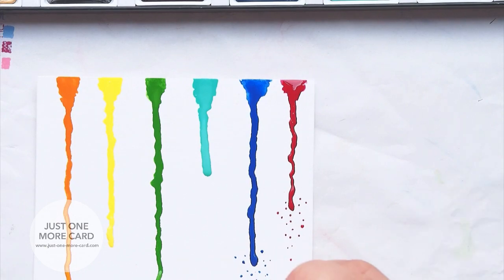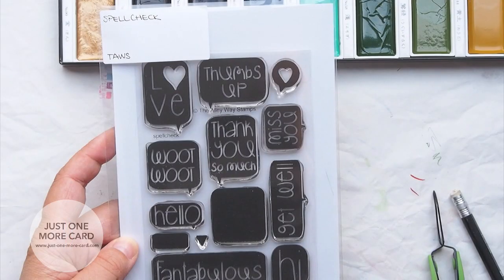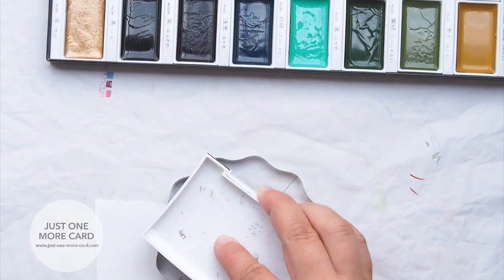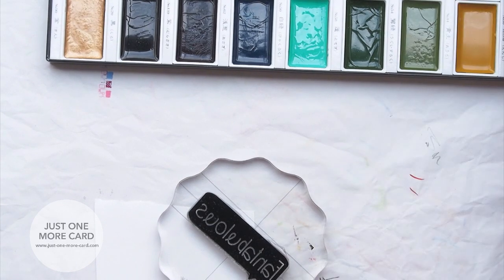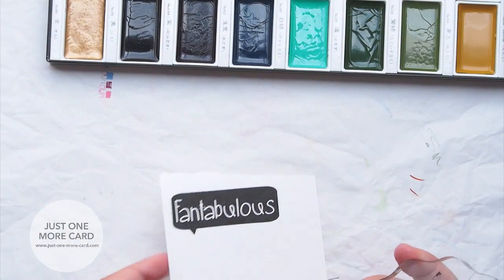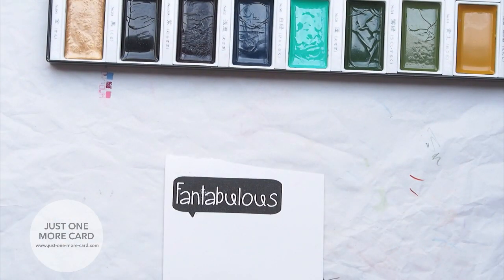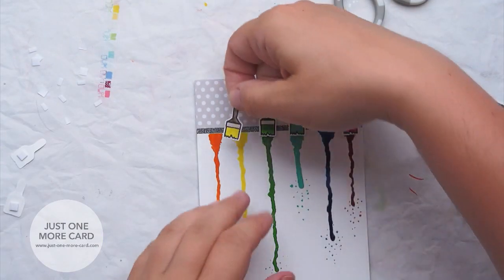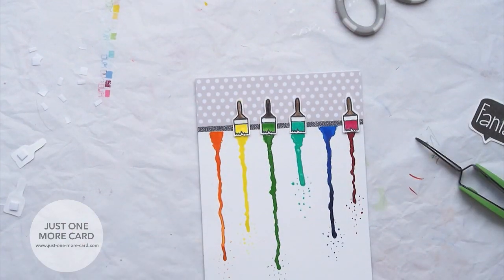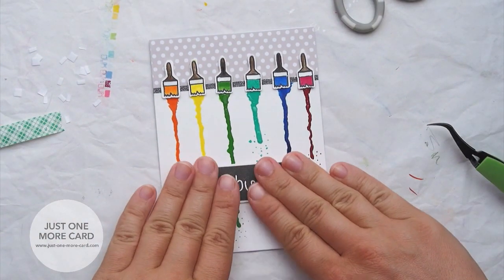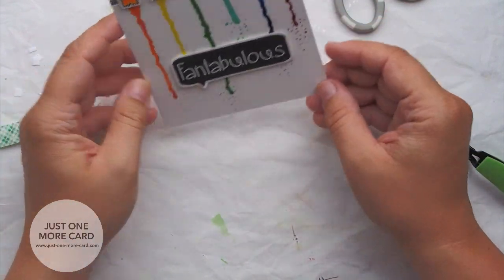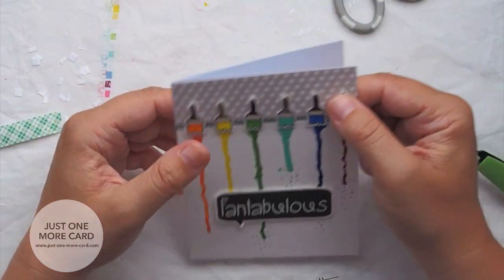Then I'm using the stamp set called Spellcheck, inking it up with Versafine ink which is a great ink for solid stamping. It's very rich and black and stamping it onto the same watercolor cardstock that I used for the watercoloring because I'm going to fuzzy cut it and have a white border around it. The paintbrushes, which I'm adhering here with foam adhesive, are also fuzzy cut from the same cardstock. I'm adhering the sentiment, I put some foam behind it so it's going to be raised a little bit. Then I figured I need something additional for the card.